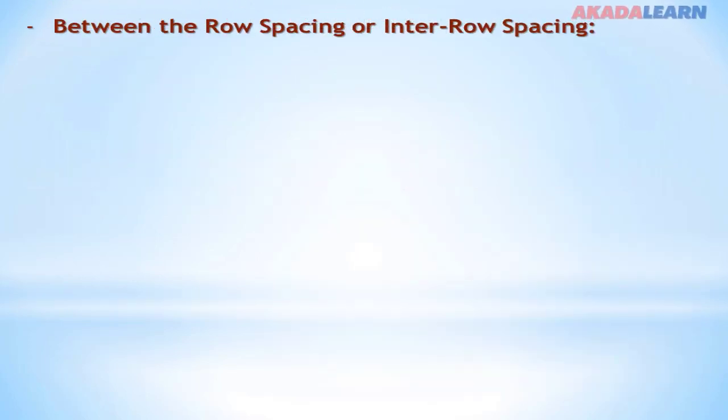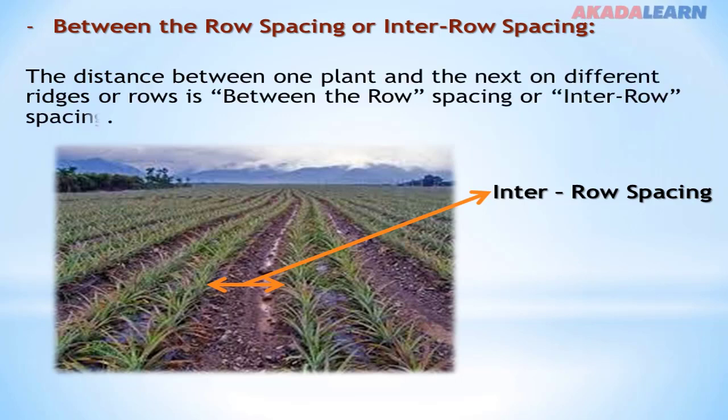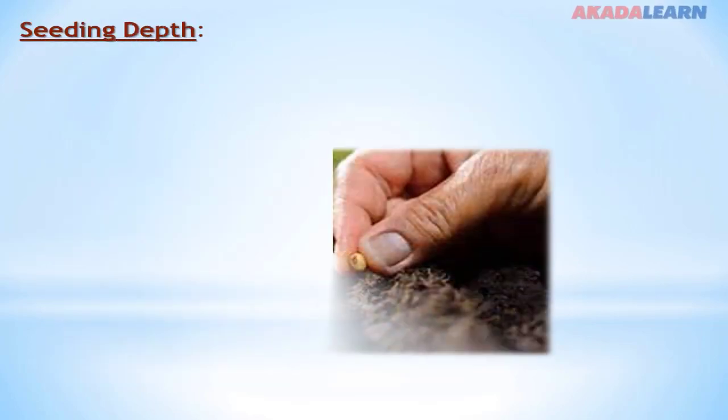The next one is between the row spacing or inter-row spacing. Now from the picture, you can see the inter-row spacing is the spacing in between two different rows.